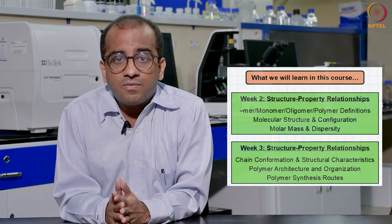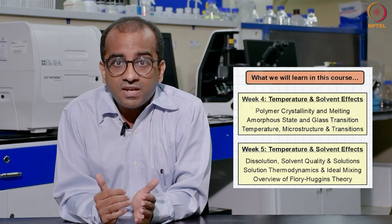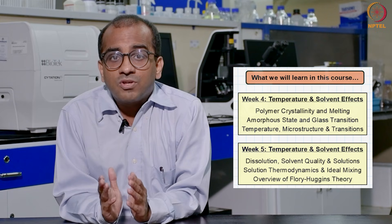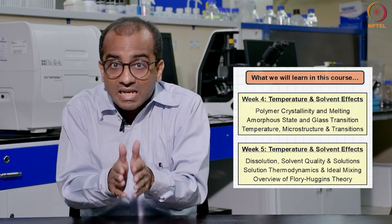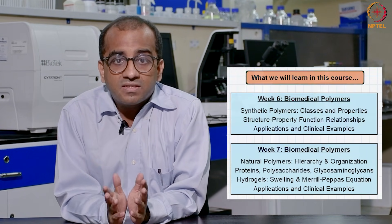Formally, this course spans 12 weeks with 30 to 35 lectures. Week one sets the tone with basic definitions, historical perspectives, and how biomaterials are used in devices. Weeks two and three focus on structure-property relationships—fundamental concepts in polymer science. Weeks four and five cover temperature and solvent effects, important for polymer microstructure, processing, and performance under physiological conditions.